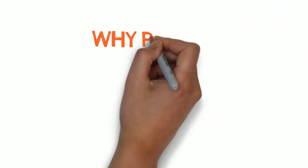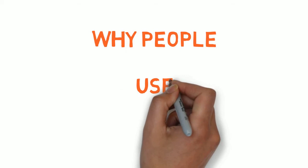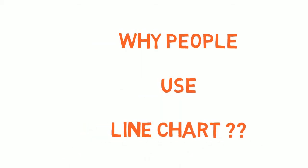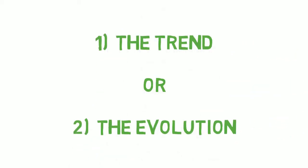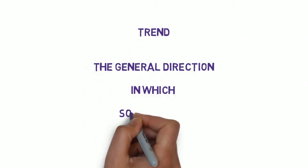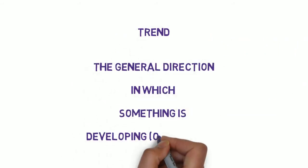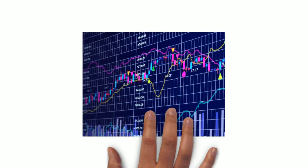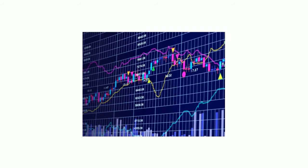The second question is, why do people use line charts? Line charts are used to show the trend or evolution. Trend, in the sense of the general direction in which something is developing or changing. We use trend analysis — that is, the use of past performances to predict the future price movements of a stock or security.